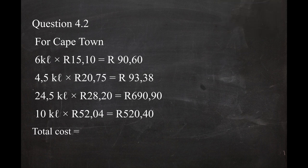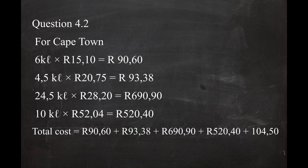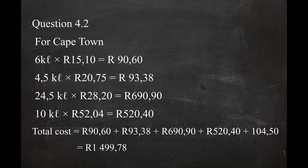The total cost of water consumption for 45 kilolitres in Cape Town is the sum of all four steps plus the fixed monthly cost of R104.50. This gives a total cost of R1,499.78.